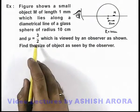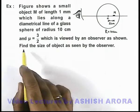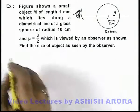And its refractive index is 3/2, which is viewed by an observer as shown. Now we are required to find the size of object as seen by the observer.